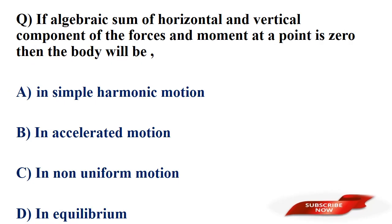If the algebraic sum of horizontal and vertical components of forces and moment at a point is zero, then the body will be? Options: in simple harmonic motion, in accelerated motion, in non-uniform motion, in equilibrium. Answer: option D, in equilibrium.